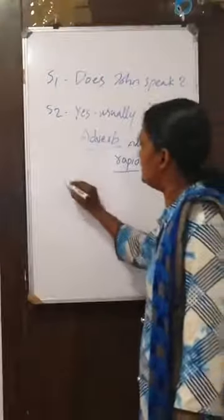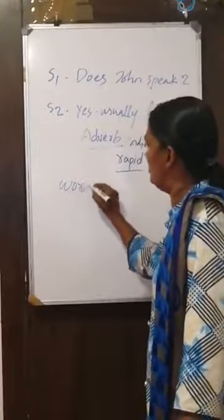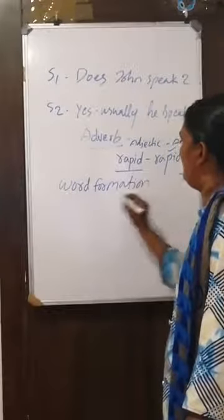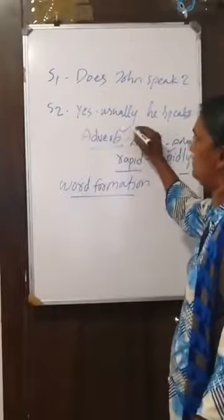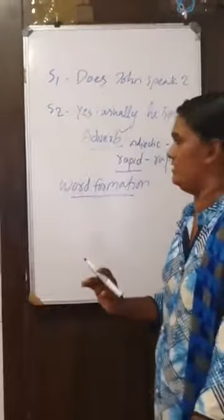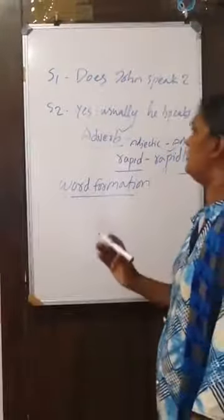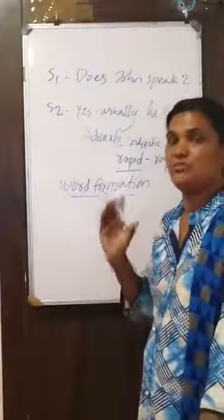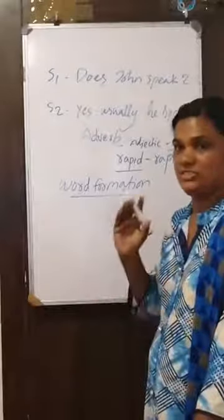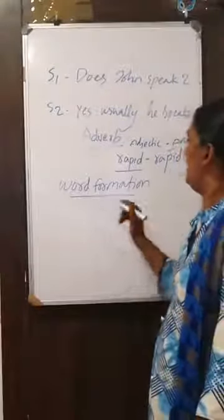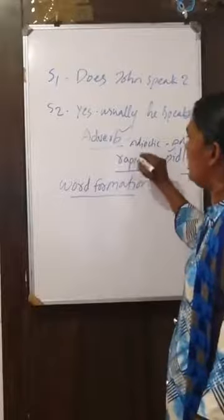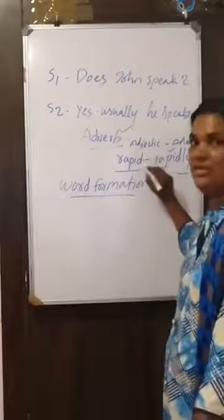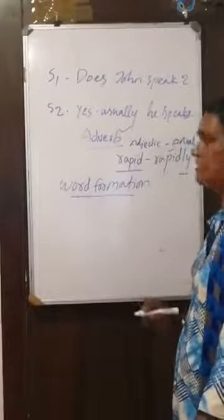Here we can study word formation — how to make an adverb. I told you that we can make an adverb and it is a modifying verb. It can add something to the meaning of verb, adjective, or adverb. Here I used the adjective rapid and transformed it into the adverb rapidly.